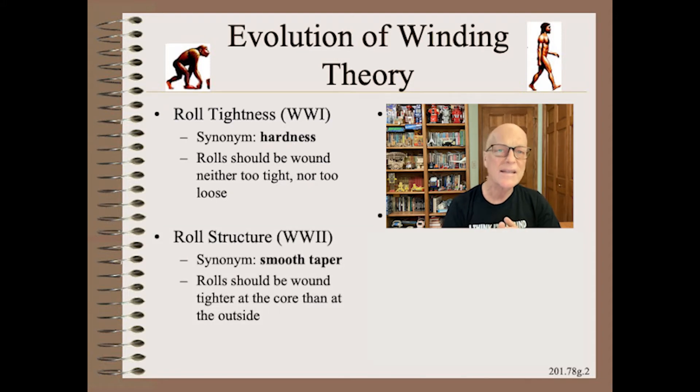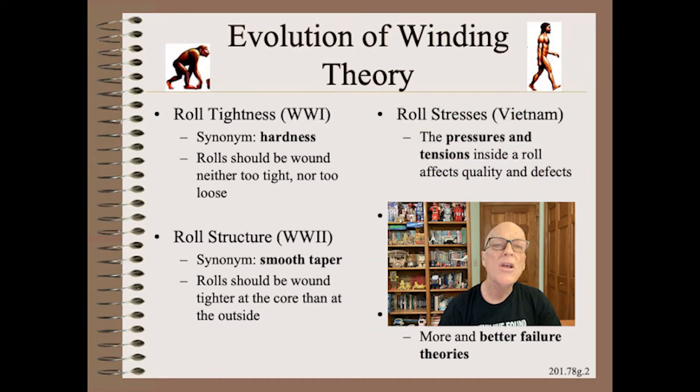The second stage of evolution was around World War II - that is, rolls should be tighter at the core than at the outside. This is called roll structure by the paper industry and taper by the converting industry. This concept led to changes in rider roll or lay-on roll or nip load programming.